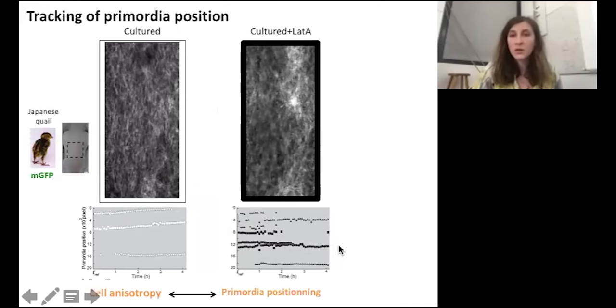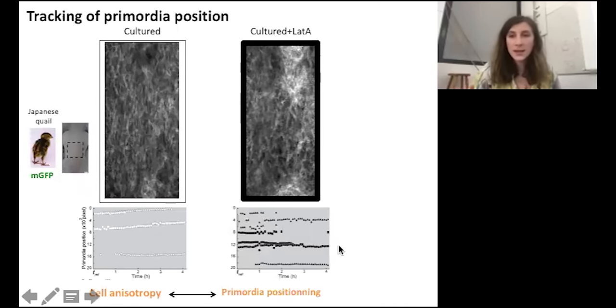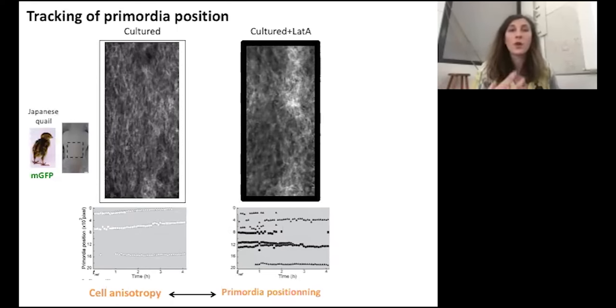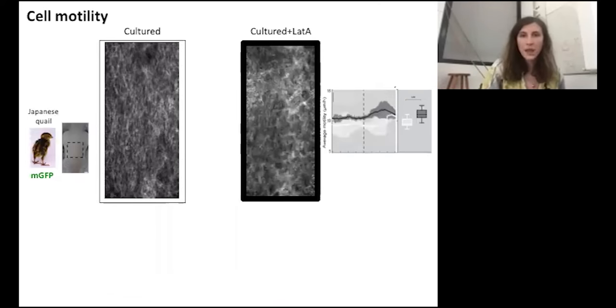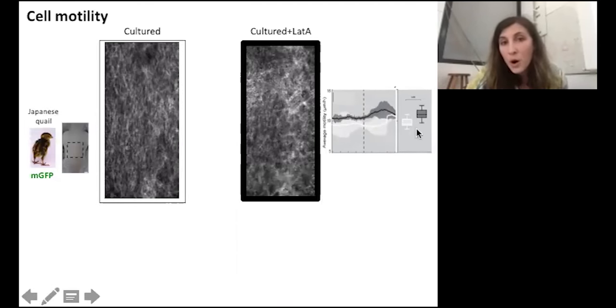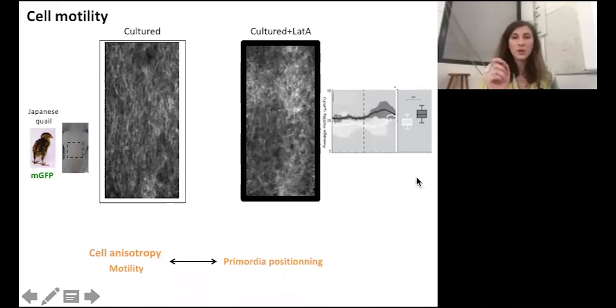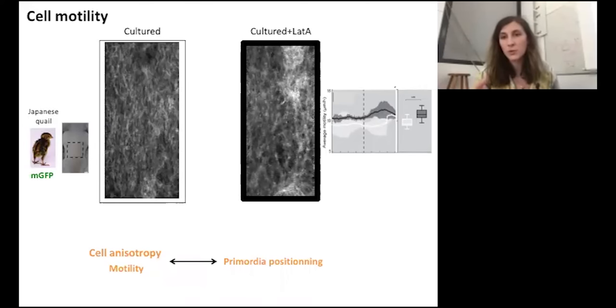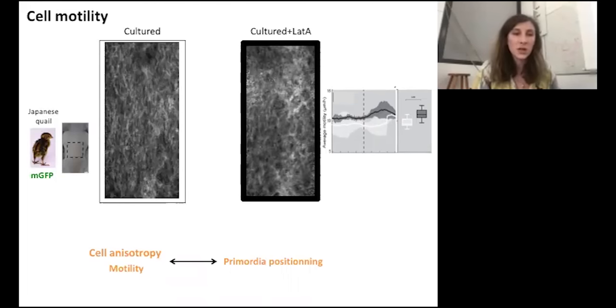This result showed that the decrease of anisotropy caused a poor positioning of the primordia resulting in the formation of a lower fidelity pattern. Finally, we recorded cell motility and we saw that the dermal cells were more motile across the whole patterning space in treated explants. Meaning that a reduction of cell anisotropy correlates with freer dermal cell movement and an impaired positioning of the primordia.